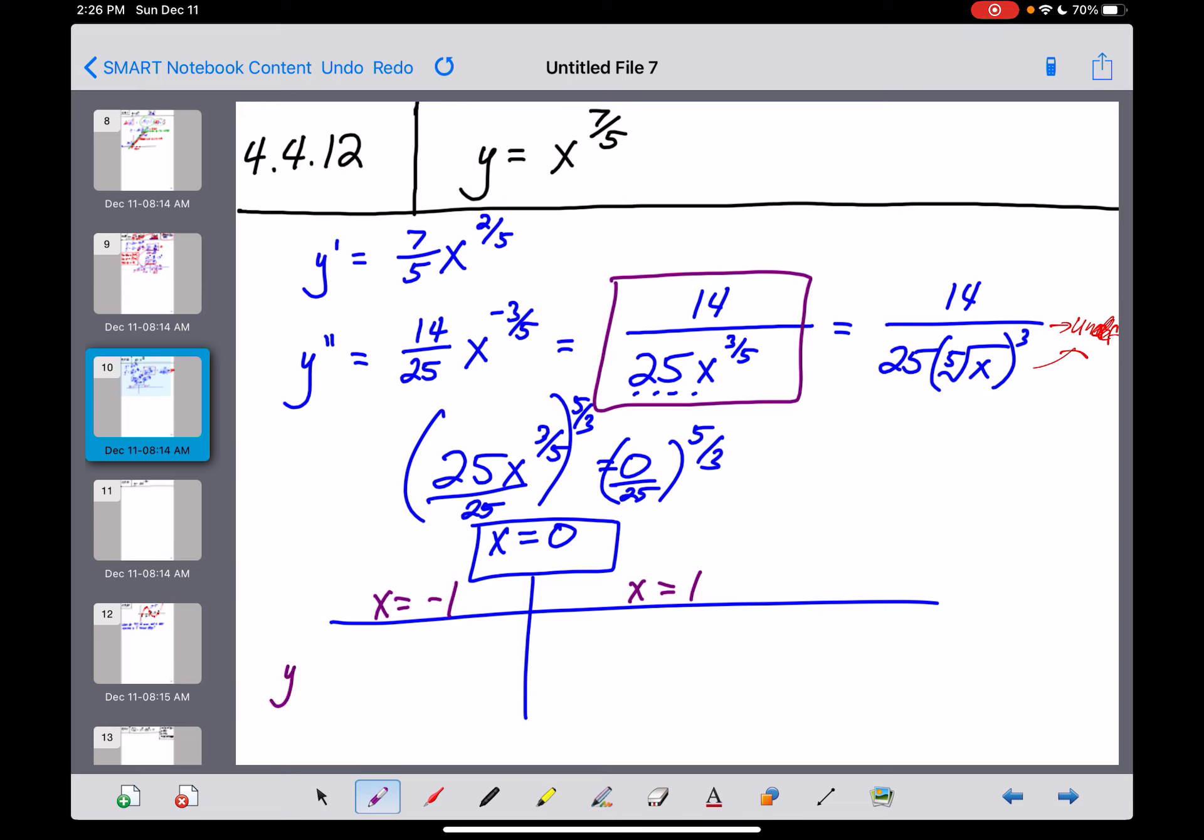So here we go. If we take y double prime of negative one, let's put it into this box. Negative one - we would want the fifth root of that, which is negative one, cubed, which is negative one, times 25, which is negative 25. And 14 over a negative is negative. So that means we're concave down on that interval.